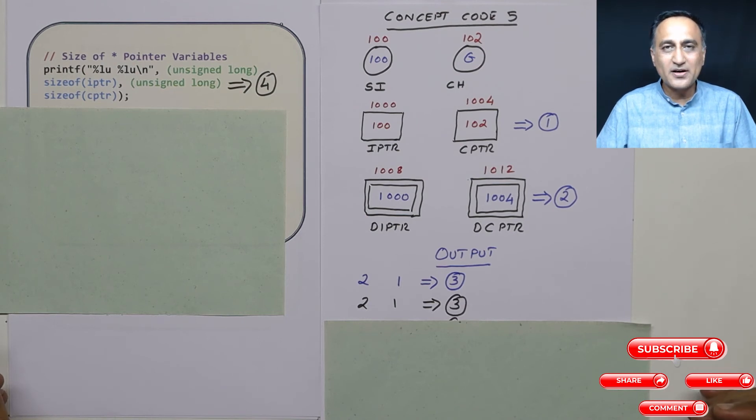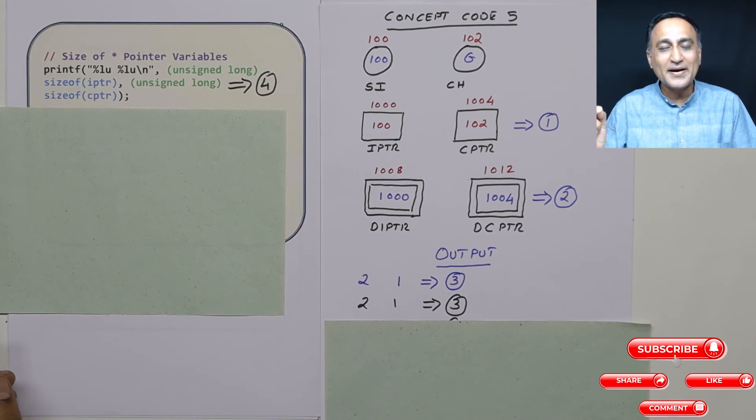A little bit of explanation is important here. If the size of my pointer variable is just 1 bit, I can basically refer to 2 addresses. If it is 2 bits, I can refer to 4 addresses. If it is 3 bits, I can refer to 8 addresses. If it is 4 bits, I can refer to 0 to 15, 16 addresses. If it is 8 bits, I can refer to 0 to 65,000 odd kilobytes of addresses.